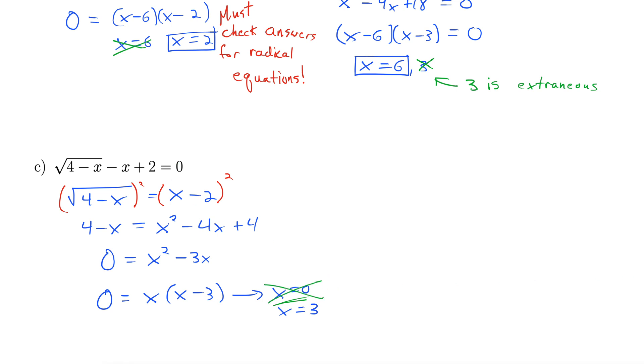And there's no guarantee that 3 will either. We could get no solution to these, and that happens too. So, we still have to check 3. Let's check it out. Square root of 4 minus 3 is square root of 1 minus 3 plus 2. Does that equal 0? Well, yes it does. 1 minus 3 plus 2 is indeed 0. That checks out. Alright, so just one answer for this last one. x equals 3.